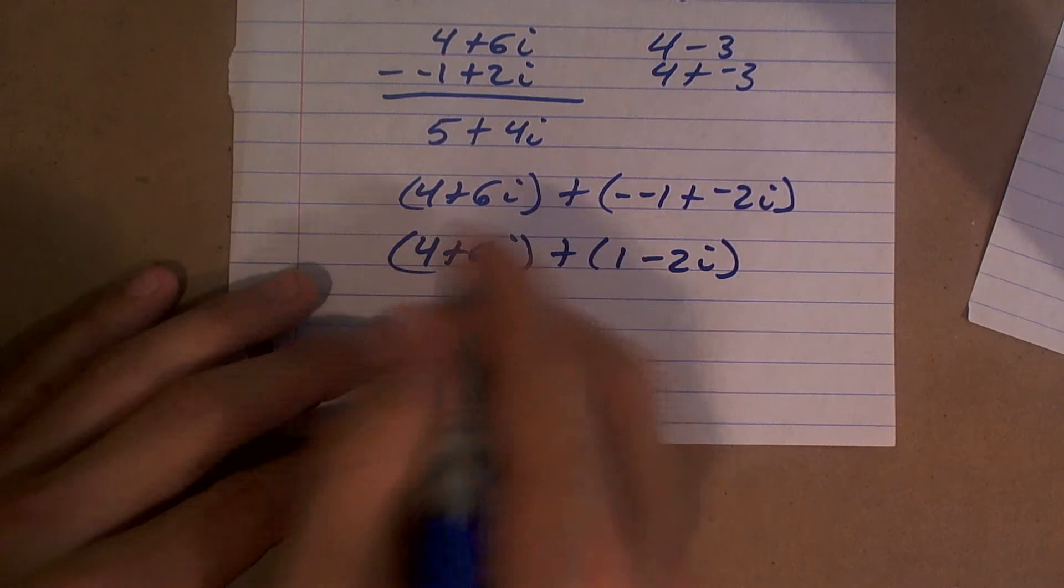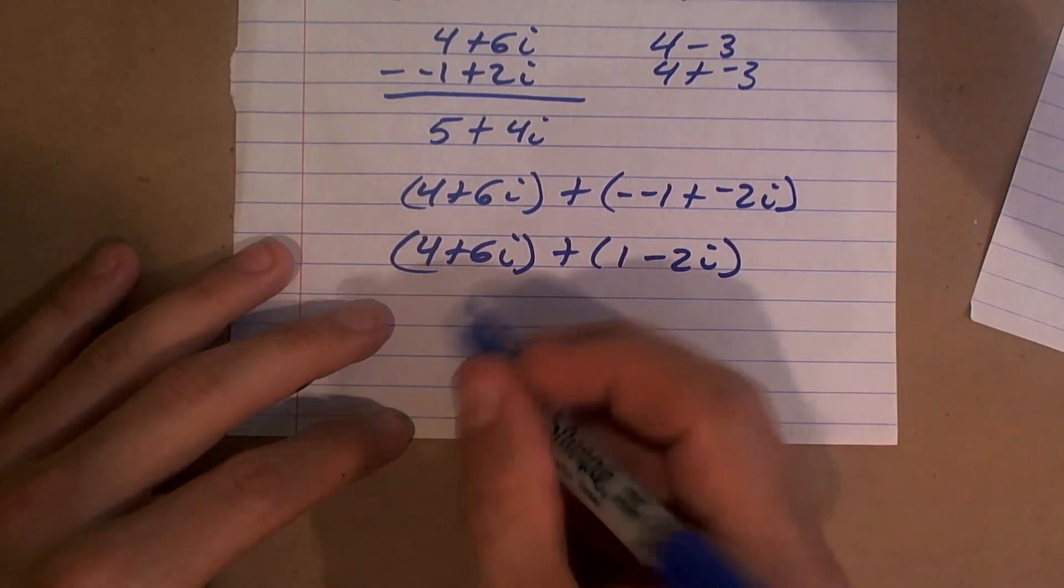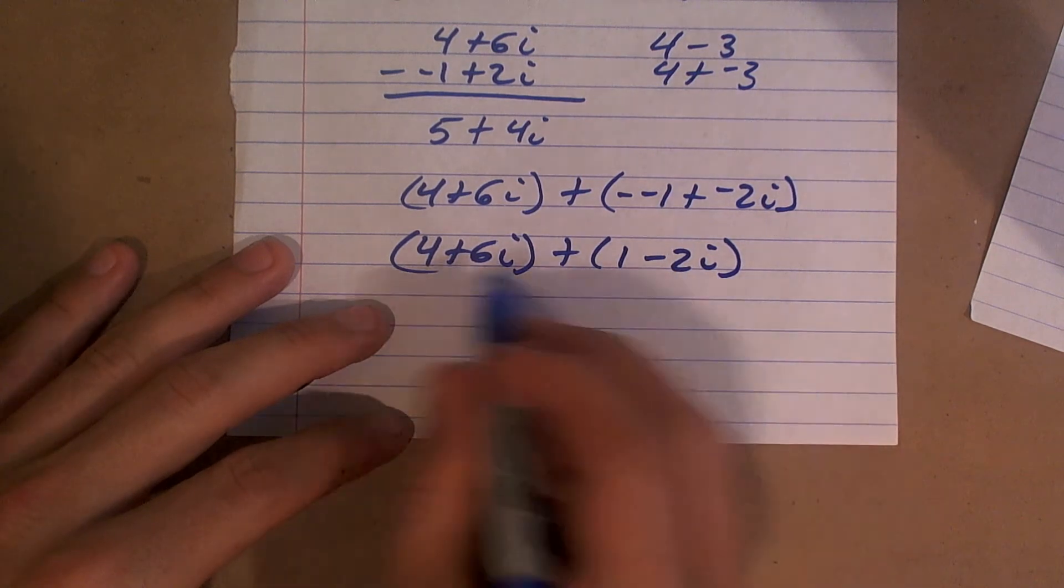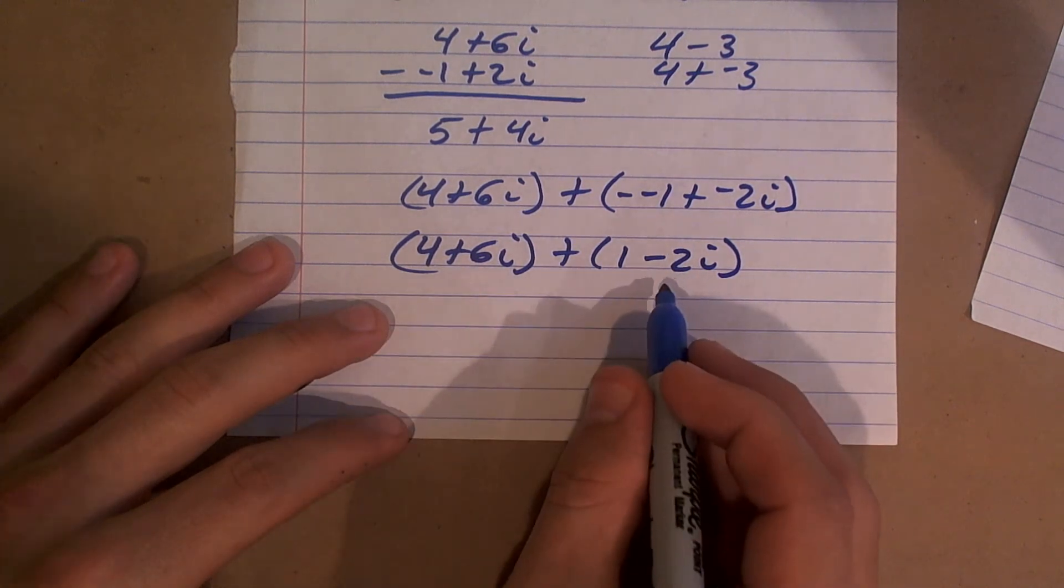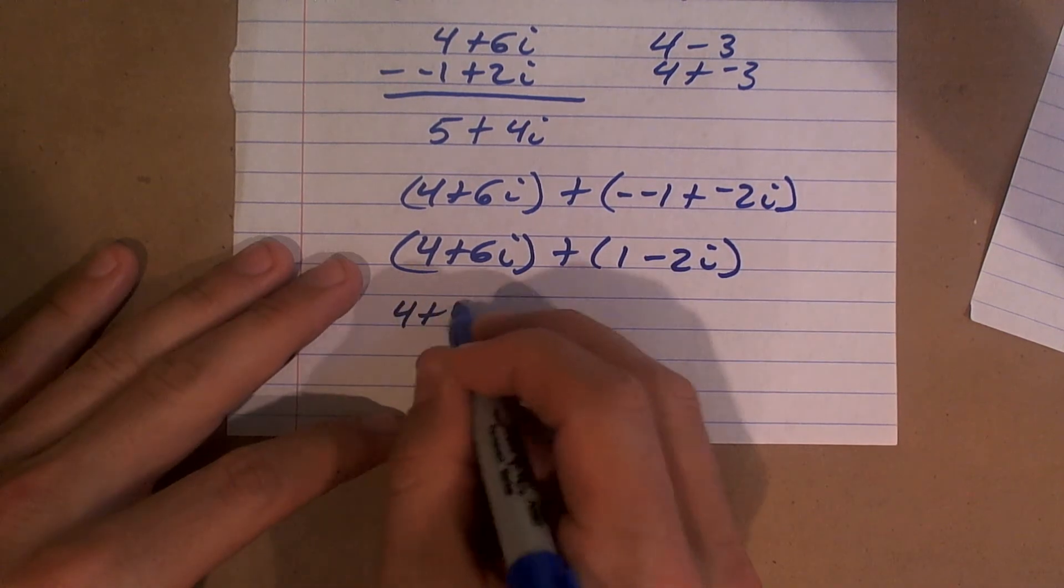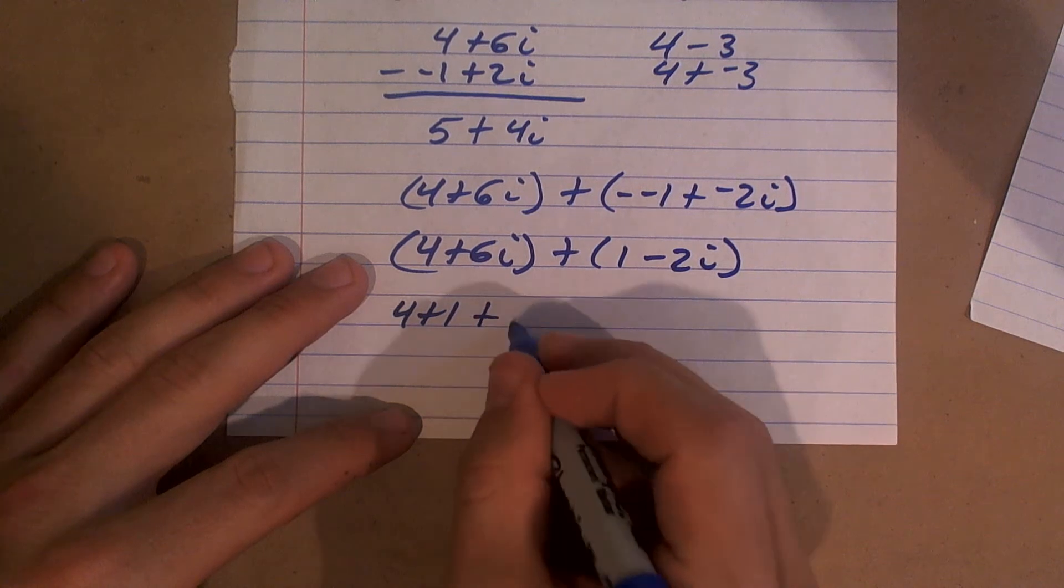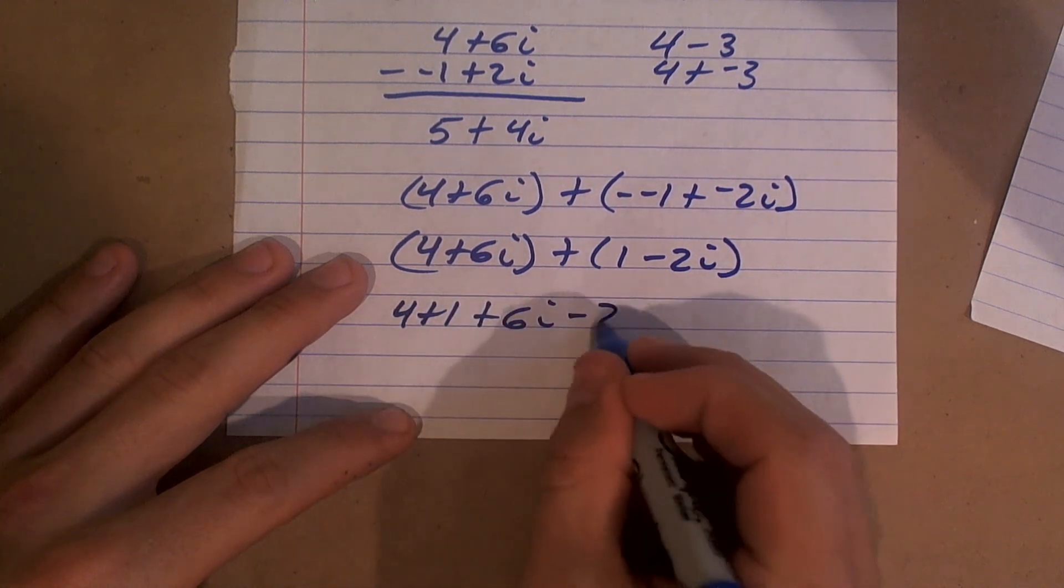And then the cool thing about this is using our associative property of addition. Now you could do this vertically, but let's show a different way to do this. You could just use the associative property and associate differently. So you could say 4 plus 1, and then take your positive 6i minus 2i, right?